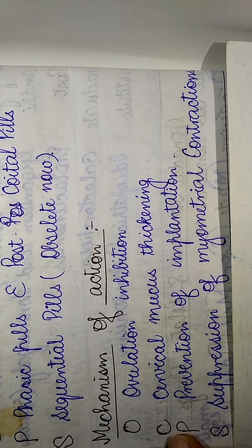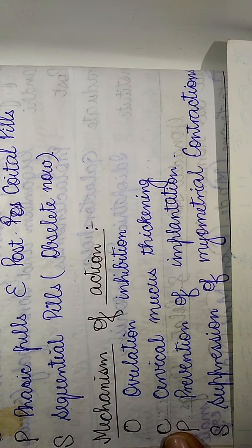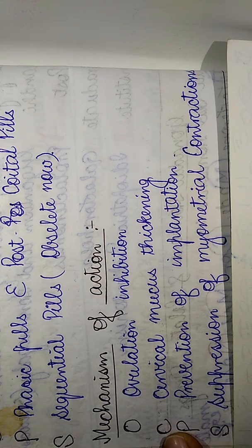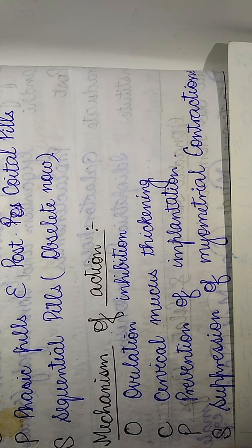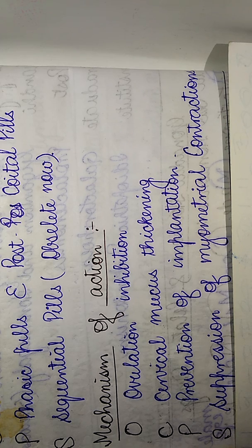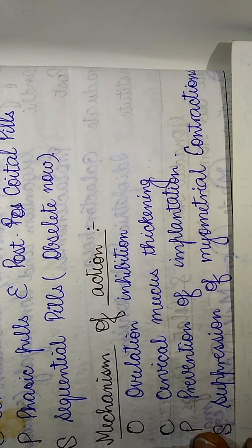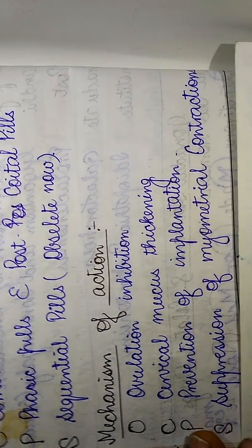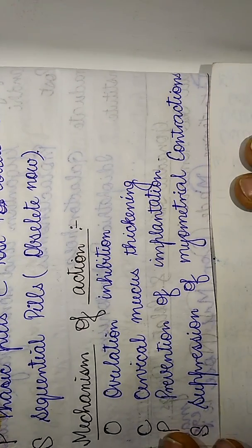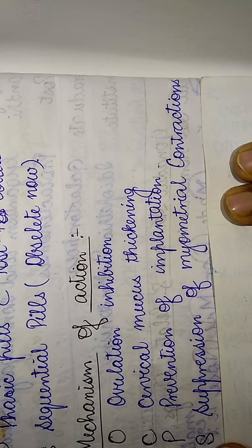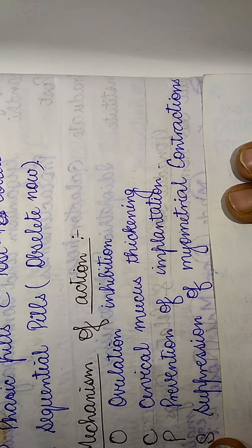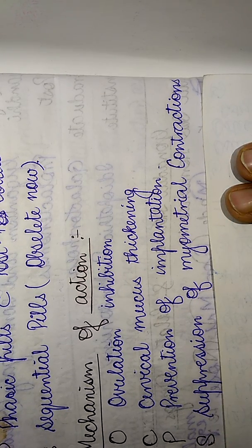The C stands for cervical mucus thickening — that is the second mechanism by which the oral contraceptive pills act is by thickening of the cervical mucus. The P stands for the prevention of implantation, and the S stands for the suppression of myometrial contraction.